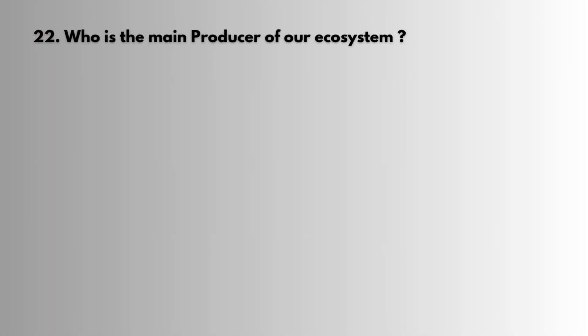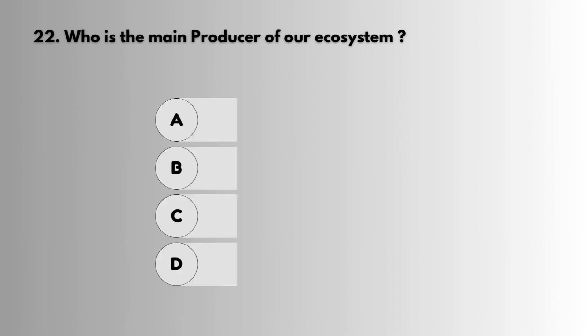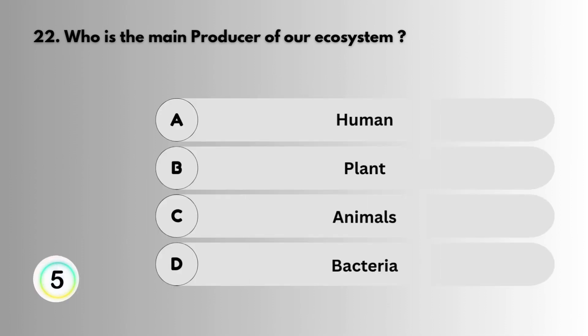Question 22: Who is the main producer of our ecosystem? Answer: Plant.